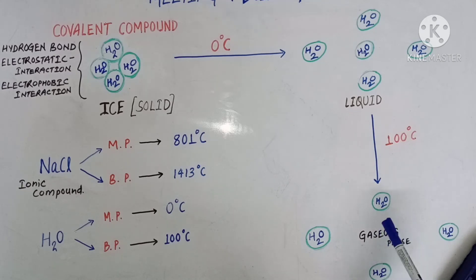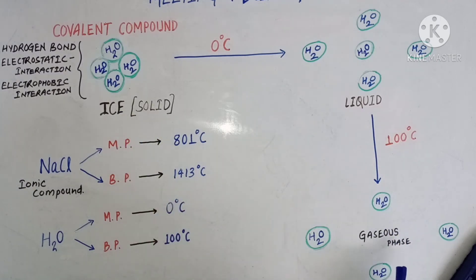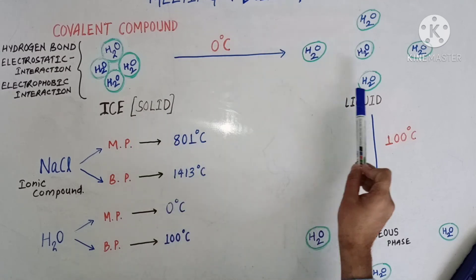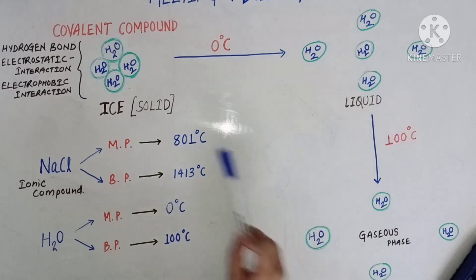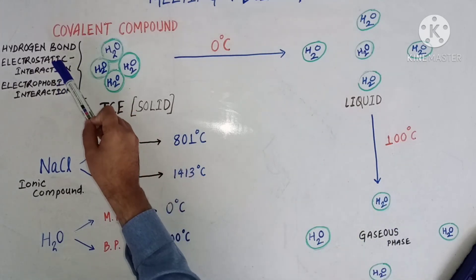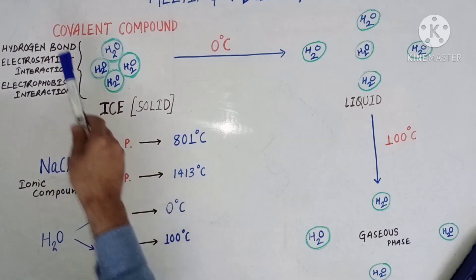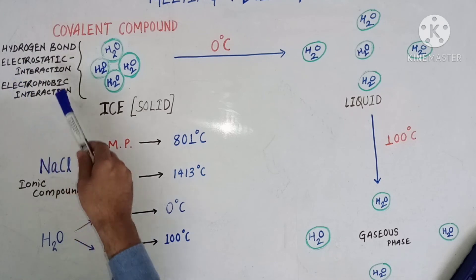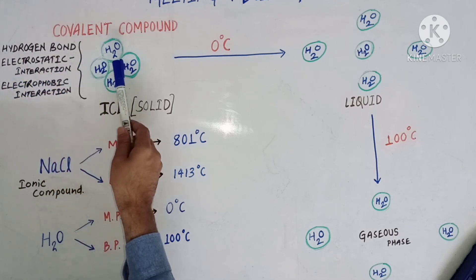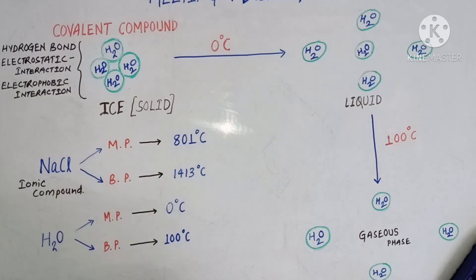Still, the water molecule remains intact — there is no harm to the water molecule. So we can see that from ice to the vapor phase, only the intermolecular interactions between the water molecules get distorted. This intermolecular interaction is quite weak — it may be hydrogen bond, electrostatic interaction, or electrophobic interaction. Due to this weak intermolecular interaction present in covalent compounds, covalent compounds have low melting and boiling points.